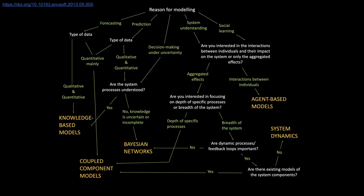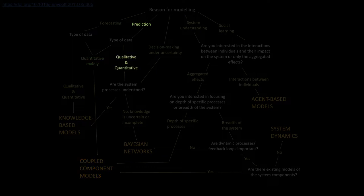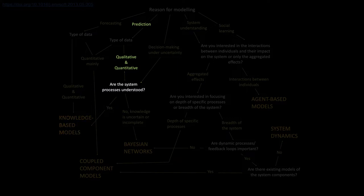In the tree, the approaches were mapped out following a small set of criteria. For example, if the modelling goal is prediction and mainly quantitative data is available, then coupled component modelling — also known as hybrid modelling — is suggested as the most suitable approach. If both qualitative and quantitative data are available and the system processes are well understood, then knowledge-based models are considered suitable. But if the knowledge on the system processes is uncertain or incomplete, Bayesian networks are considered suitable.